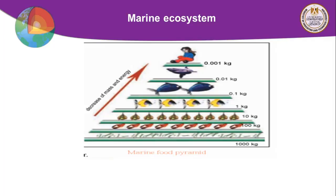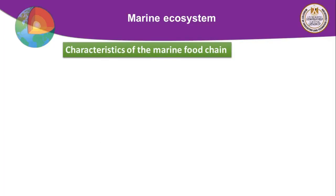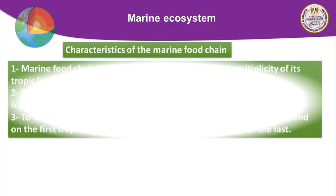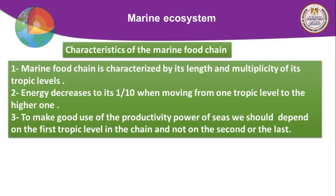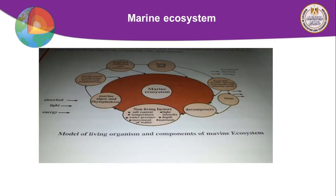The energy decreases to one tenth of its value when moving from one trophic level to the higher one. To make good use of productivity, we should depend on the first trophic level and not the second. This is to get the maximum amount of energy from the marine food chain.